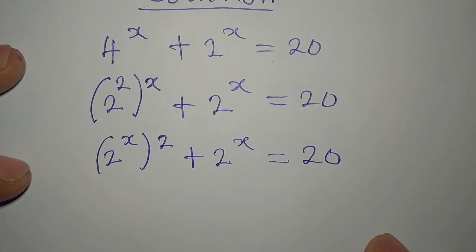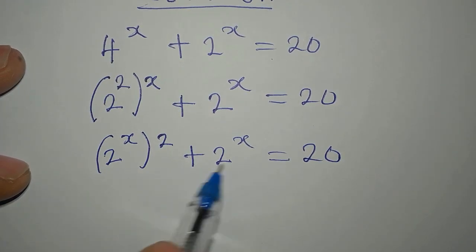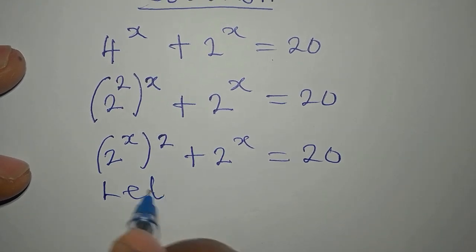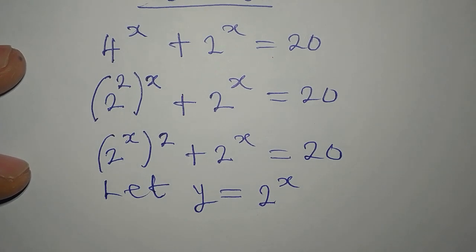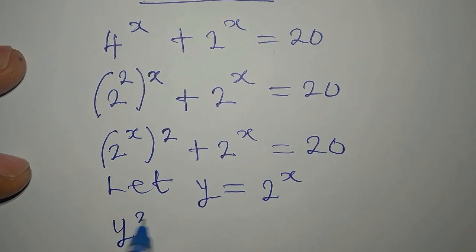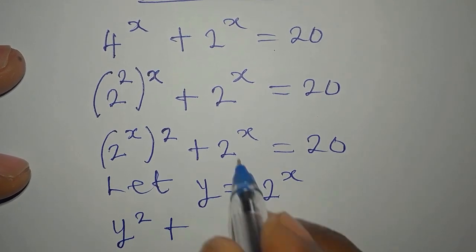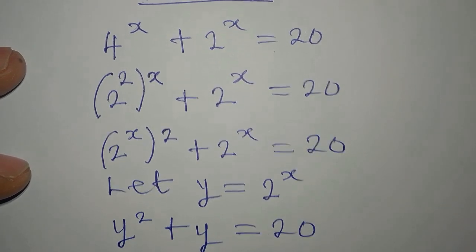What again should I do? I have 2 to the power of x in two places. And I can do something about this. So I will say, let y be equal to 2 to the power of x. So this means that here will be y squared plus here we have y and that is equal to 20.